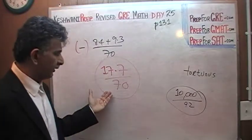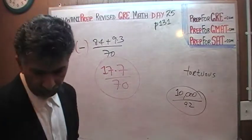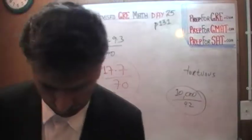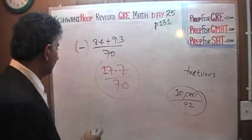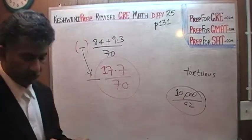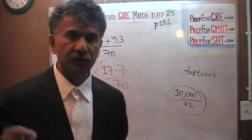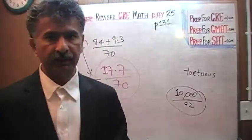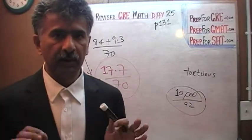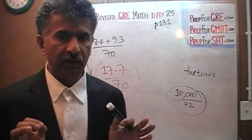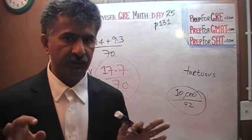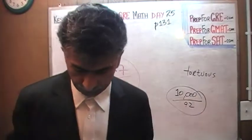So, 17.7 divided by 70 — whatever that is, just do it in the calculator, and once you have your answer, stick a negative in front of it because the negative carries through. There is no reason why you should put the negative in from the very beginning — it becomes very tedious and if you put the negative in the wrong place, you're done.